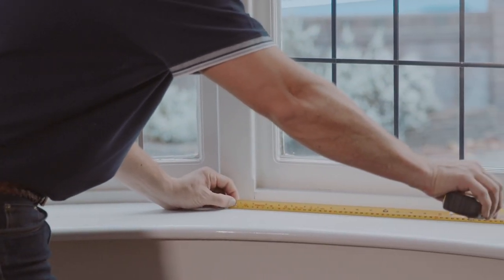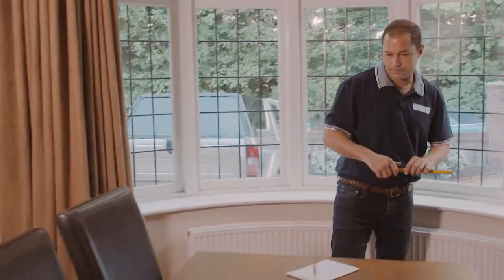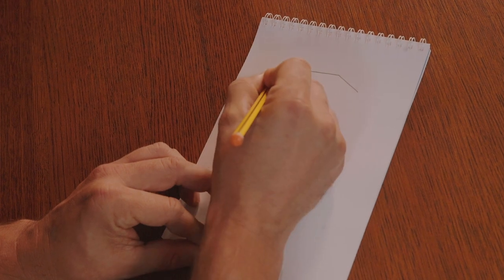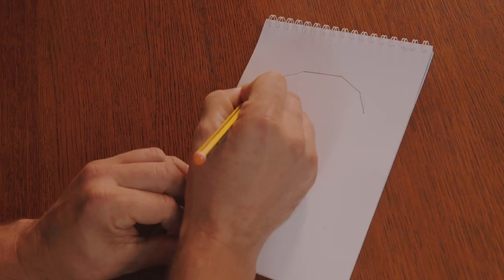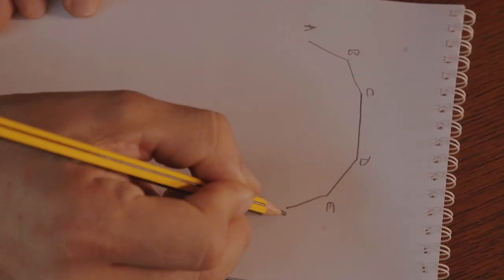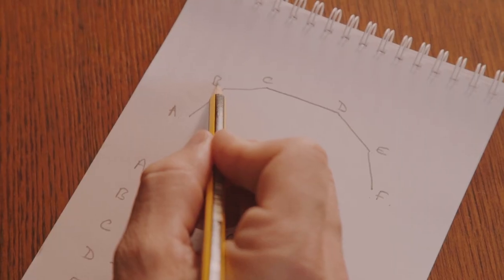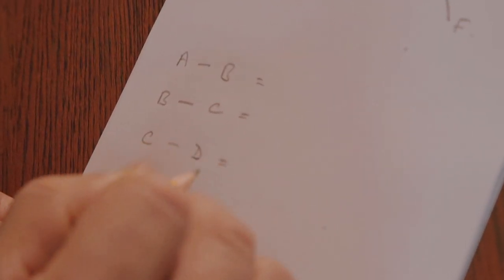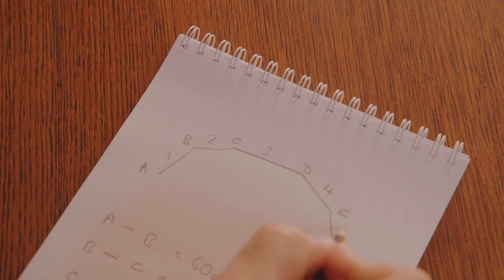So now we have the actual length for each of the sections. It always helps me if I draw out a top down view of the bay window on the page and jot the measurements down on there. So we can measure point A to point B for blind 1, point B to point C for blind 2, point C to point D for blind 3, point D to point E for blind 4, and finally point E to point F for blind 5.